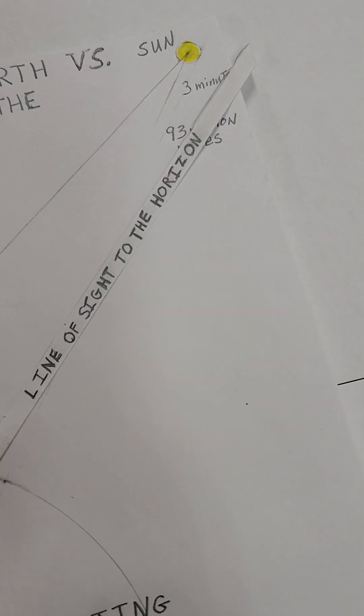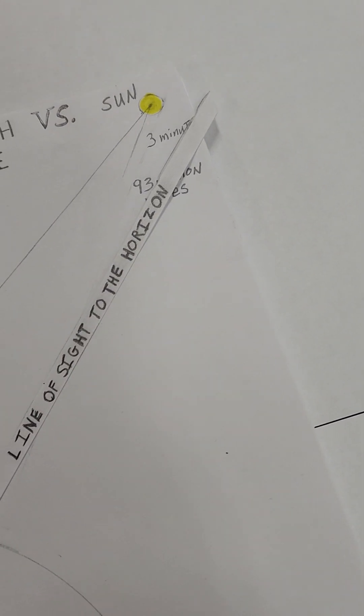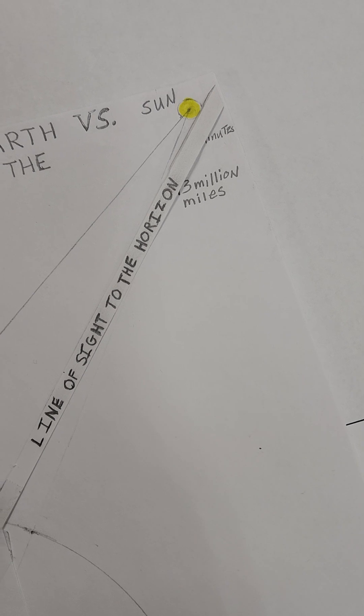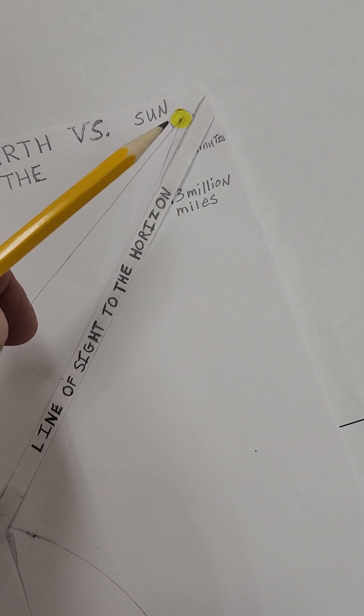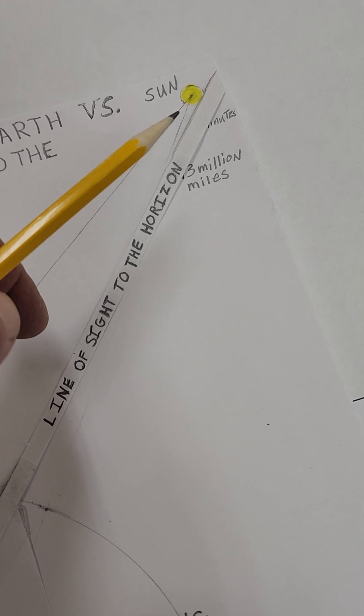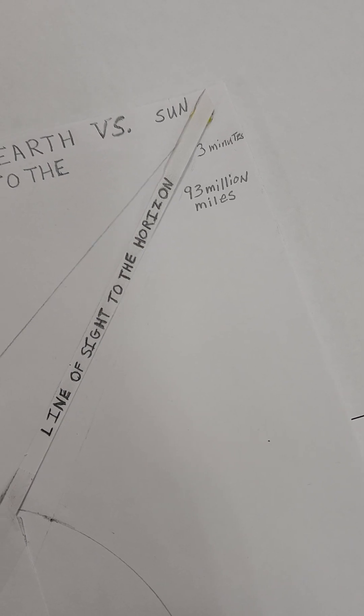Now, I made a little notation here. Three minutes. It takes three minutes. Your line of sight is just at the bottom of the sun, standing on the water's edge of the ocean. You're at the water's edge. So, it takes about three minutes to go from here to there.